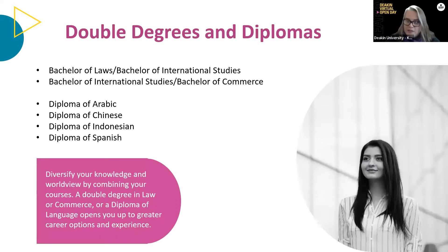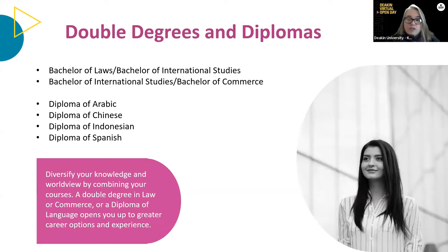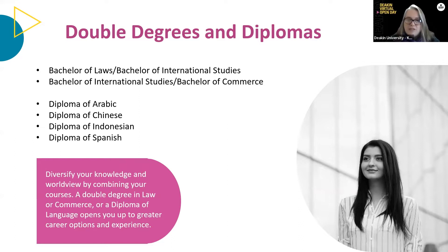A popular way to complete the Bachelor of International Studies is by combining it with a Bachelor of Laws or Commerce degree, or by adding a Diploma of Languages. When you study at Deakin, you can add a combined course or diploma even after starting your degree, which highlights the flexibility of studying at Deakin. Many students choose to engage in additional study whilst already undertaking a degree, so be confident that you have the flexibility to add these options after commencing.